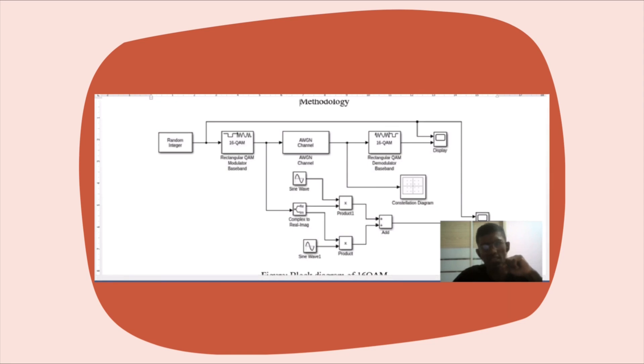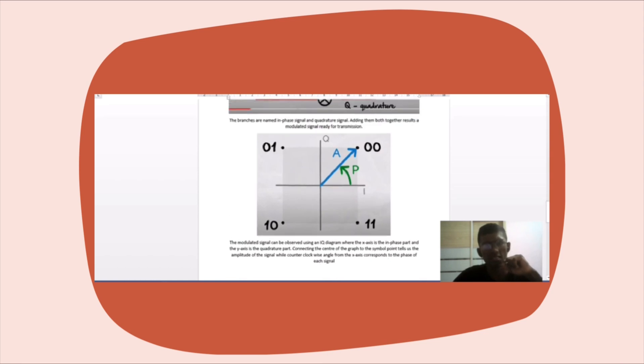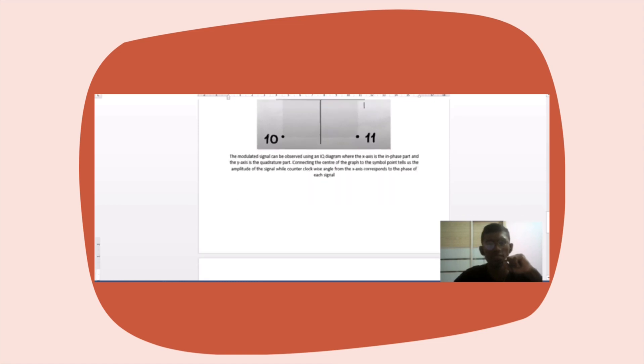The modulated signal can be observed using an IQ diagram, where the X-axis is the in-phase part and the Y-axis is the quadrature part. Connecting the center of the graph to the symbol point tells us the amplitude of the signal, while the counterclockwise angle from the X-axis corresponds to the phase of each signal.